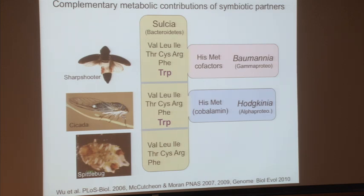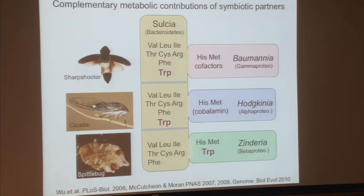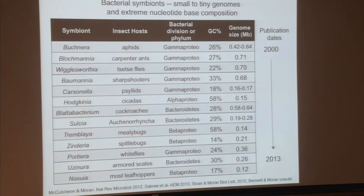In spittlebugs, Sulcia makes seven amino acids — it has lost the full tryptophan pathway. In this case the partner is a beta proteobacterium that makes histidine, methionine, and tryptophan, which is seven genes. So again there's this perfect pattern of complementarity, and it makes you feel like the genome sequences actually do mean something.